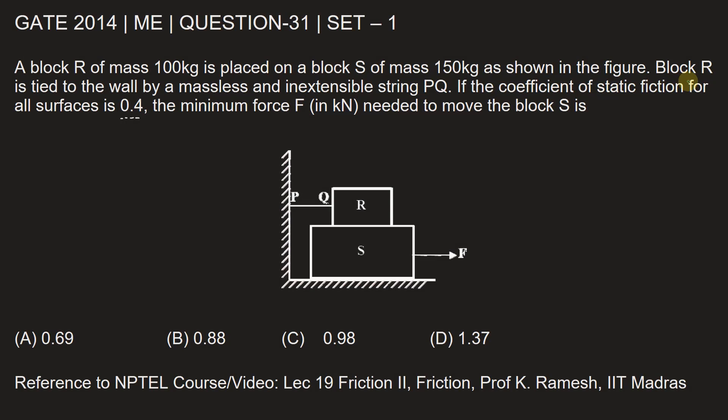If coefficient of static friction for all surfaces is 0.4, minimum force F in kilonewton needed to move the block. That's why we have used static equilibrium equation because we are being asked the minimum force F required to move the block. So at that point, at that value of F where the motion will be just beginning, it will just be begun is what we have to calculate which is nothing but 1.373 kilonewton.